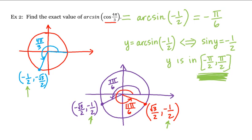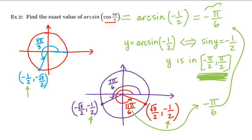What we need to do is determine the angle that is coterminal with eleven pi over six lying in that interval, which is negative pi over six. So this is our answer. This is how we work with compositions involving inverse trig functions. Thank you and we'll see you next time.